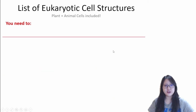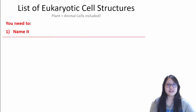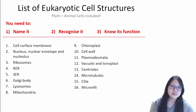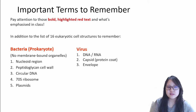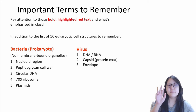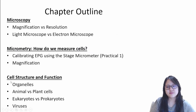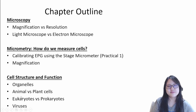With that, we have covered all the eukaryotic structures we need to. We've also covered prokaryotes and viruses. Three main things we've learned: organelles, eukaryotes versus prokaryotes, and viruses. That's the end of chapter one.